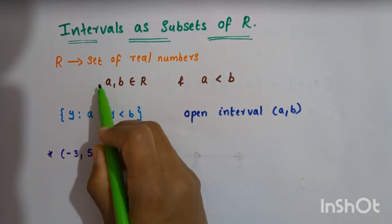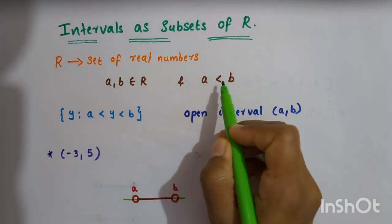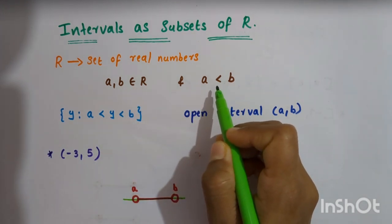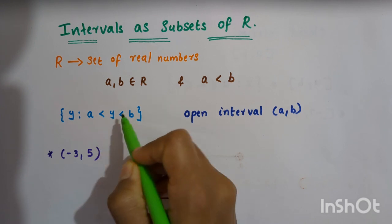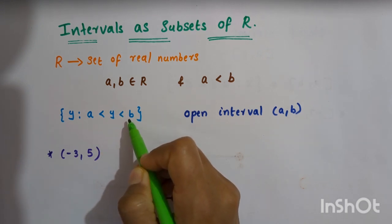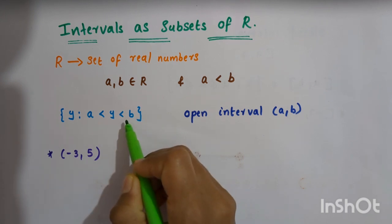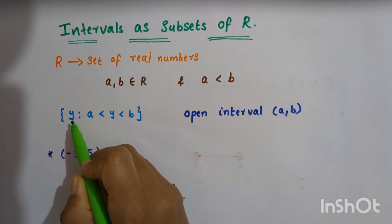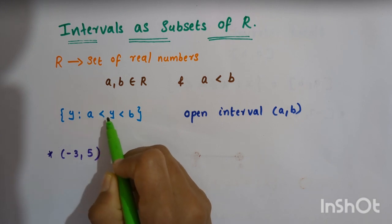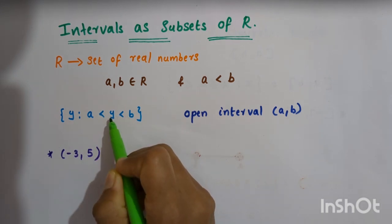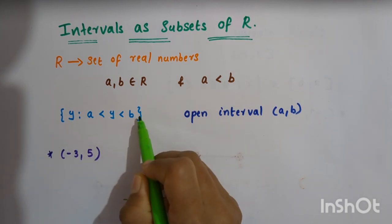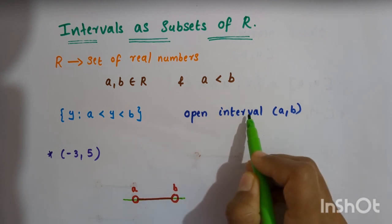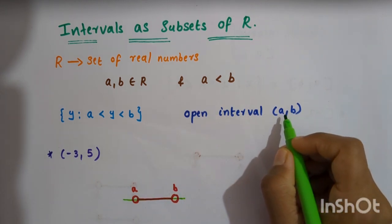Let a, b belong to R and a less than b. Then the set of real numbers y such that a < y < b is written in set-builder form like this. That is the set of real numbers y such that a < y < b — y is a real number greater than a but less than b. In set-builder form we write it like this, and this is actually called an open interval. Open interval (a, b) is written with two open brackets.